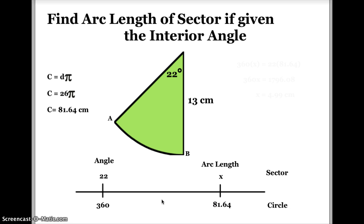From this information, I've created a little proportion. I have the angle of a sector, the arc length of a sector, the angle of a circle, the circumference or arc length of a circle. And now I can cross multiply.